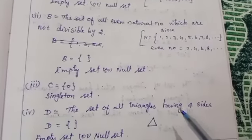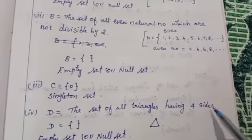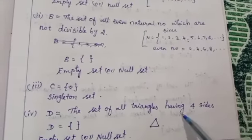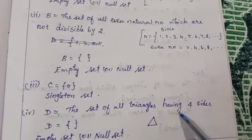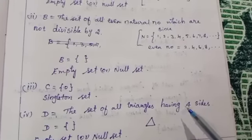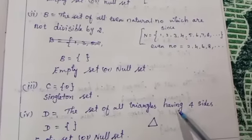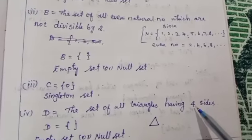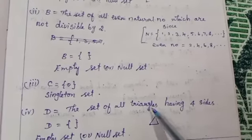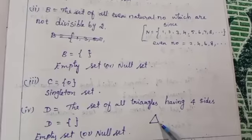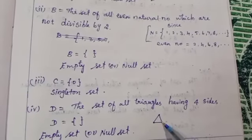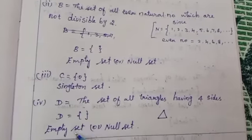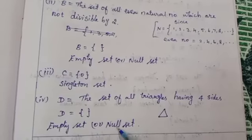D is equal to set of all triangles having 4 sides. Does any triangle have 4 sides? No. Any shape having 4 sides is called a quadrilateral. Triangles have only 3 sides. So D is equal to empty set, or null set.